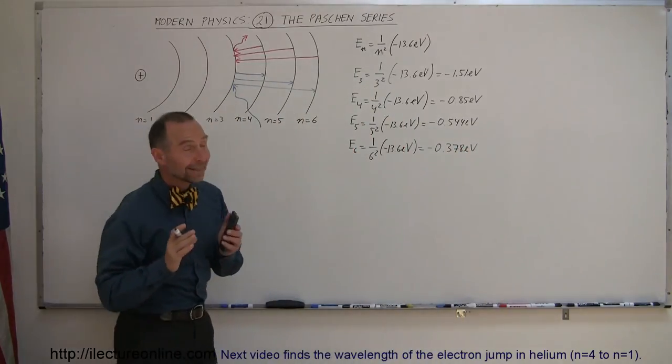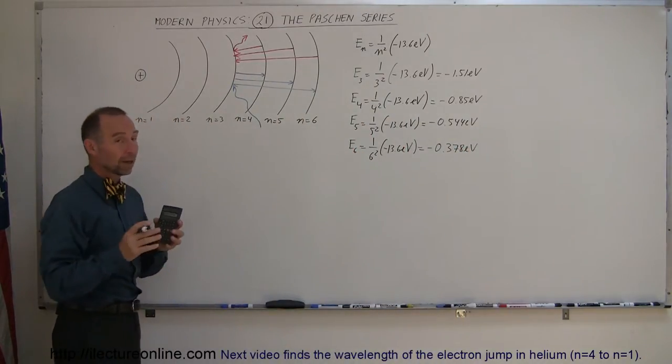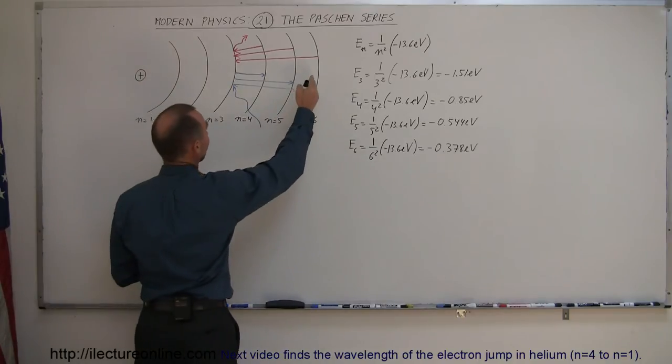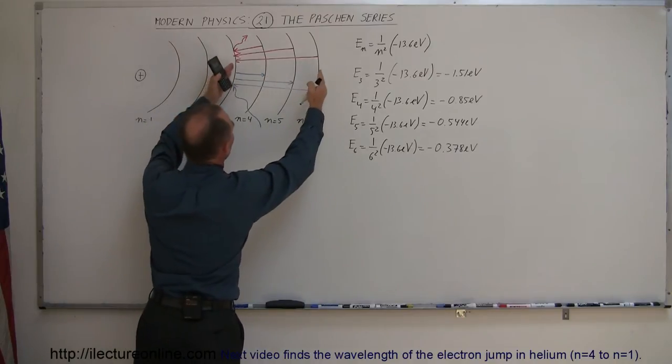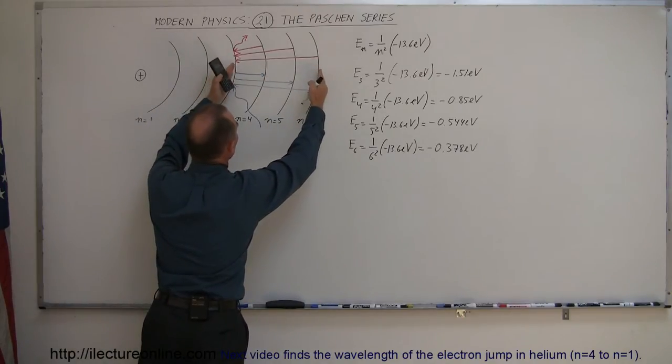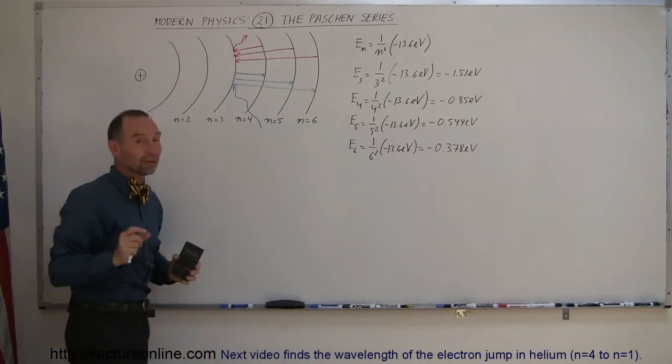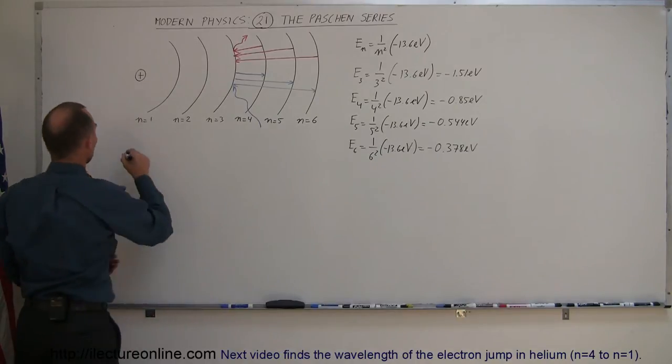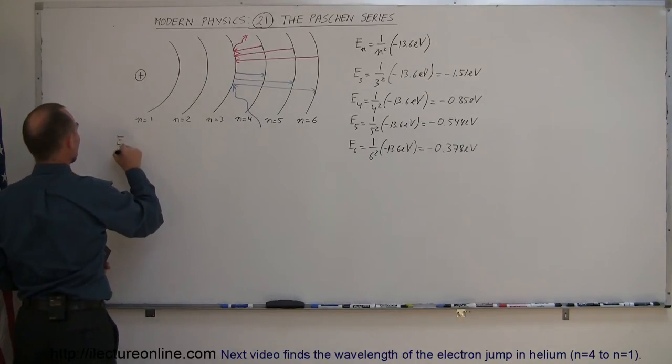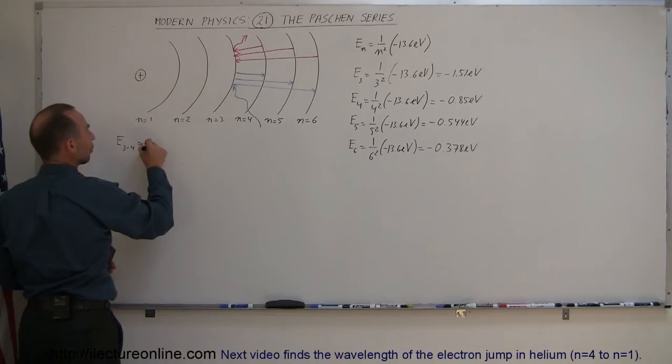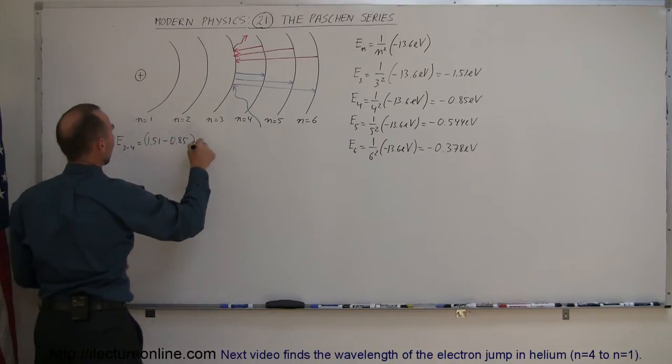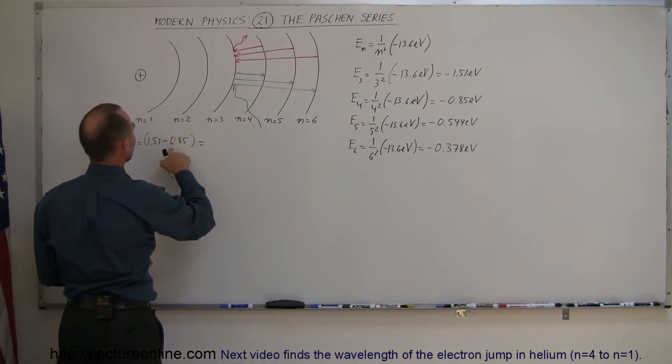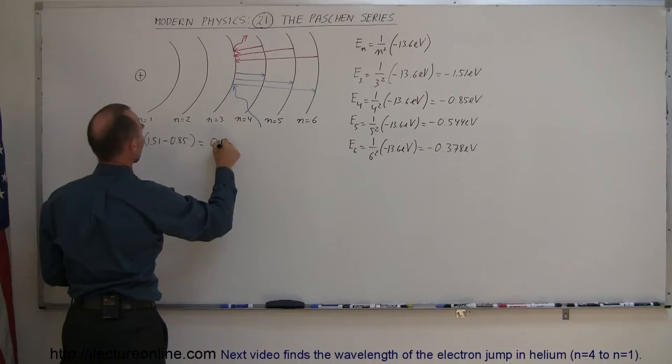Now we need to find the difference between those energy levels, because when an electron jumps, let's say from the sixth down to the third energy level, then a photon is emitted by equivalent in energy to the difference between those two energy levels. So we have E from 3 to 4 is equal to 1.51 minus 0.85, and that would be equal to 0.66 electron volts.